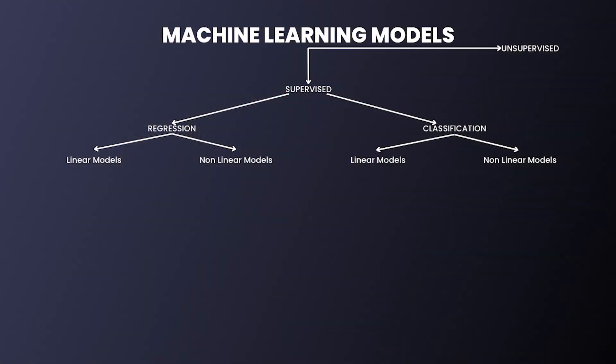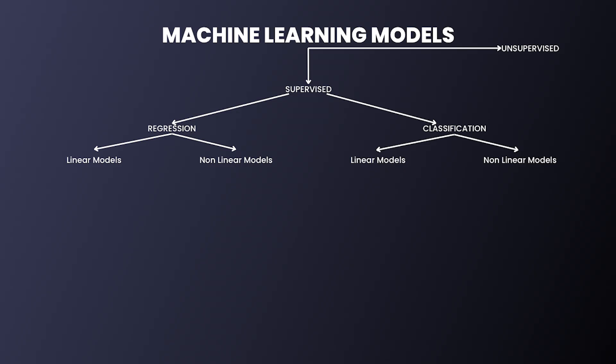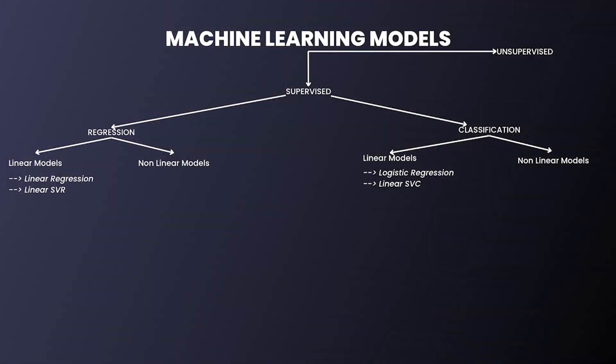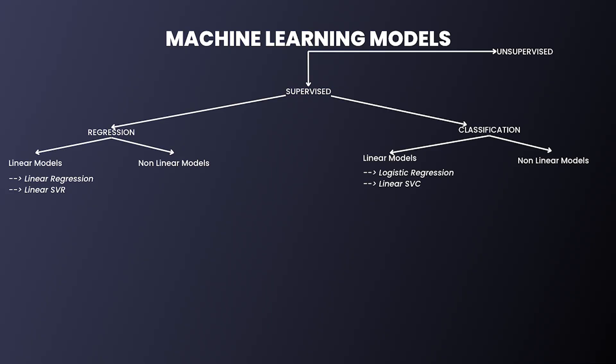Linear models can detect some obvious patterns and there are some linear relationships, but they will not detect all relationships — especially the non-linear ones — so you won't have all the possible information. Examples of linear models include linear regression, linear SVM, and so on.